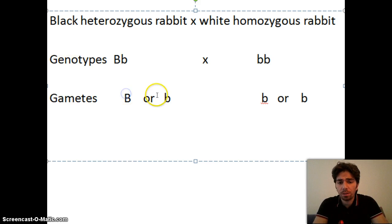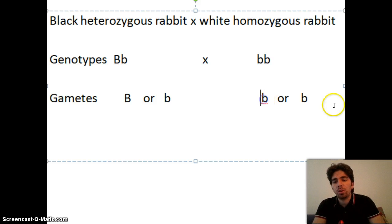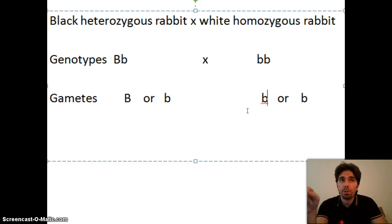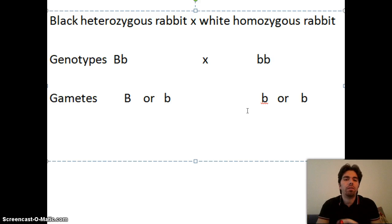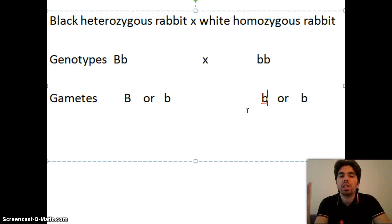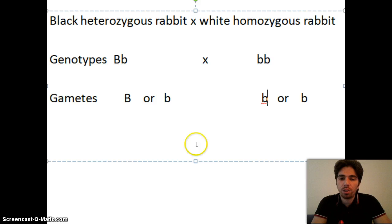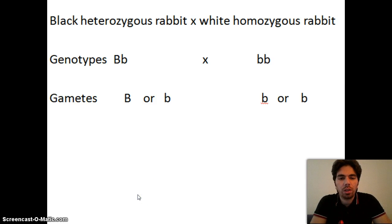Once you have the gametes, place them in a Punnett square — big B and small b on the top row, small b on the side. Fill in the four boxes. If asked for genotypic percentages and phenotypic percentages: give genotypes as letters (big B small b, small b small b) and phenotypes as words (black, white). Try to work this out and show me your results when you come to class. I hope this was helpful — see you next time!